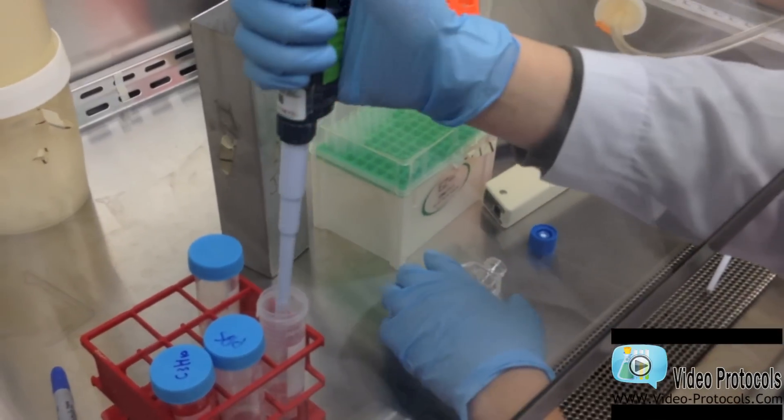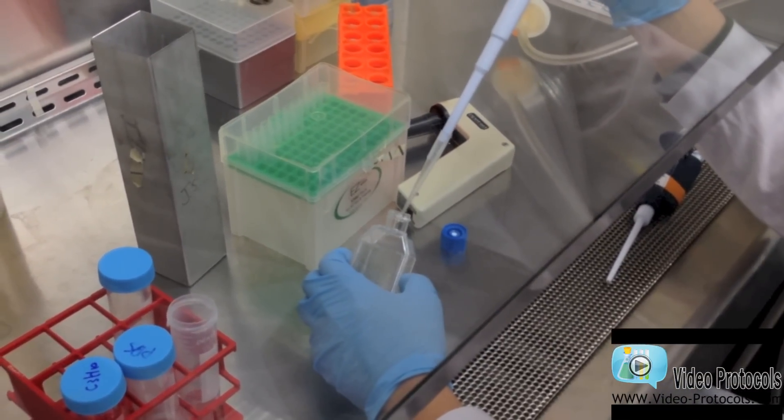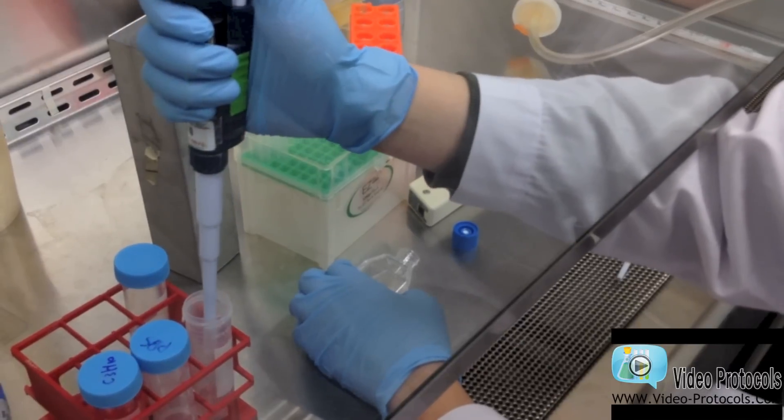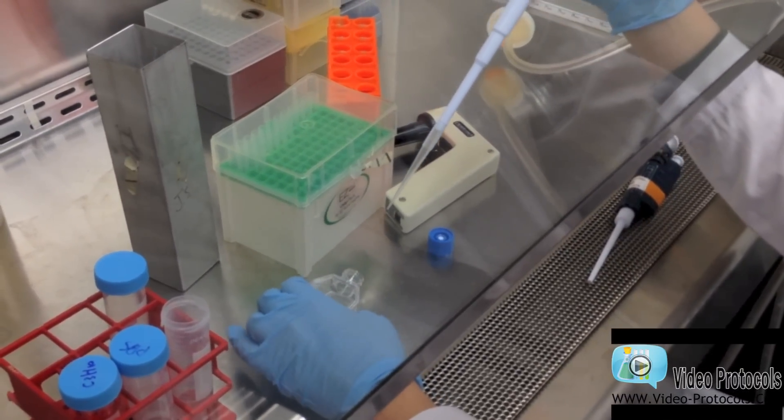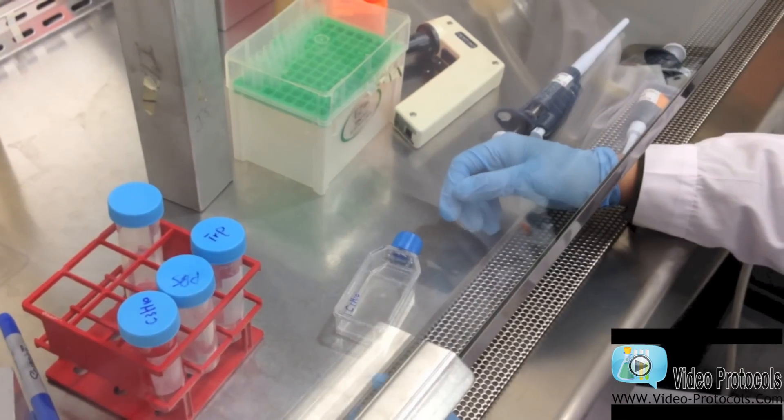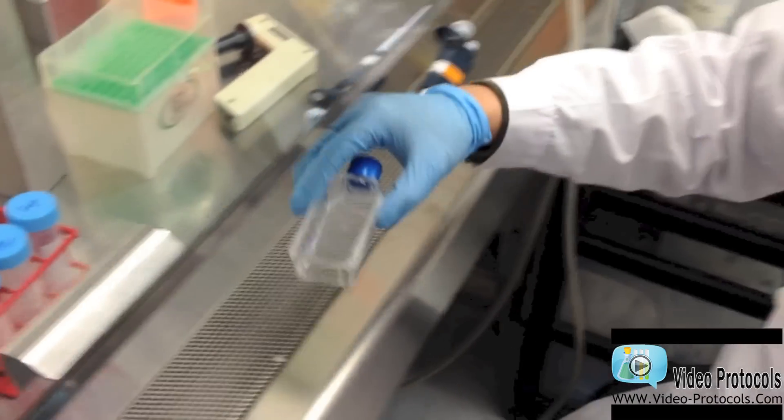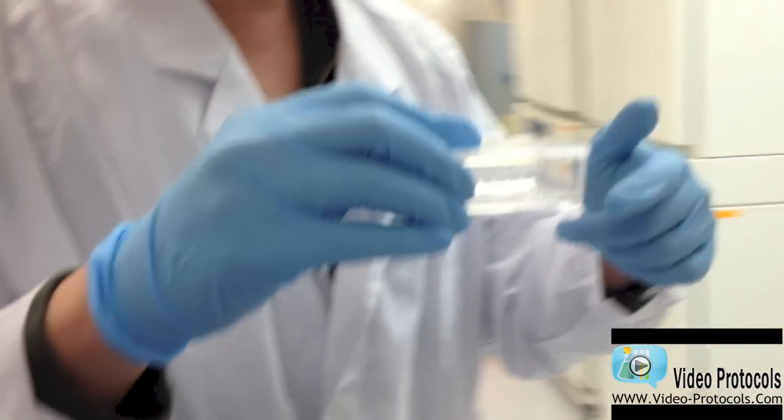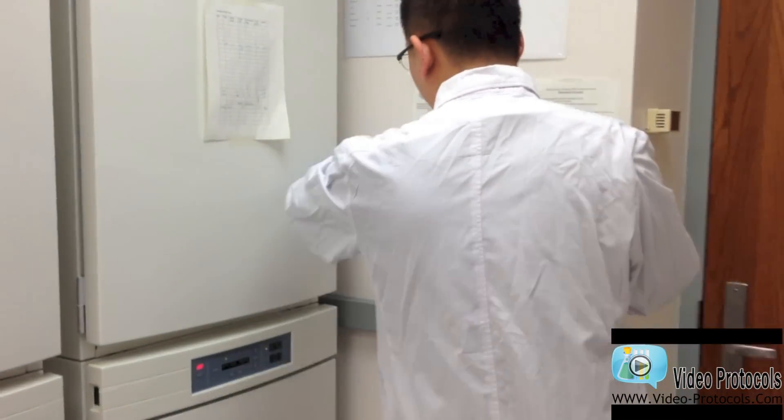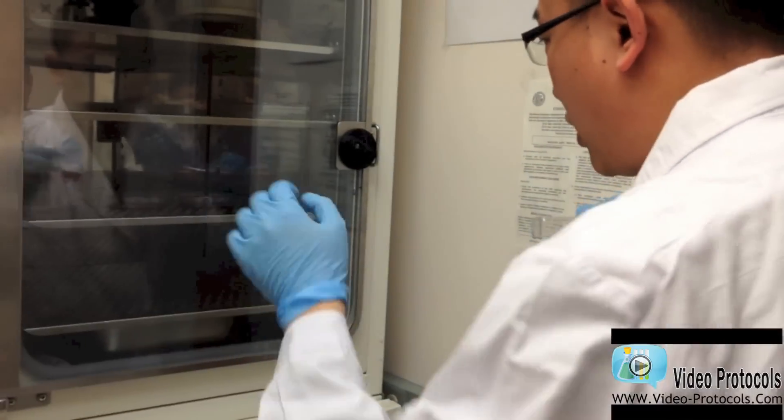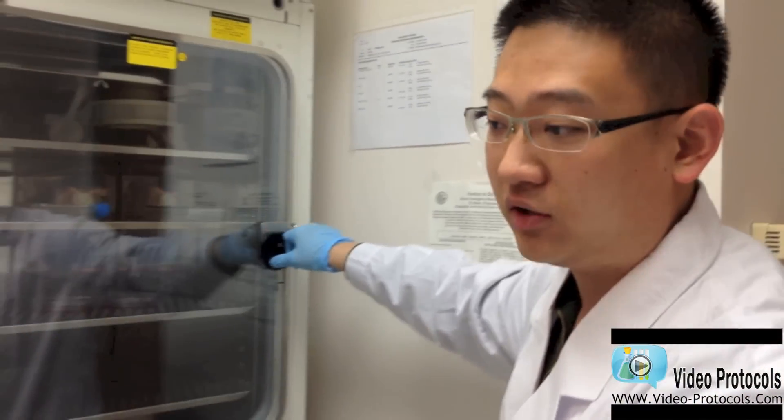I will then use trypsin, an enzyme, to detach the cells from the culture plate. The best working temperature for the enzyme is at 37 degrees. So I am going to put this flask into the incubator and wait for anywhere between 2 to 10 minutes, depending on the trypsin concentration you use and the cell type.